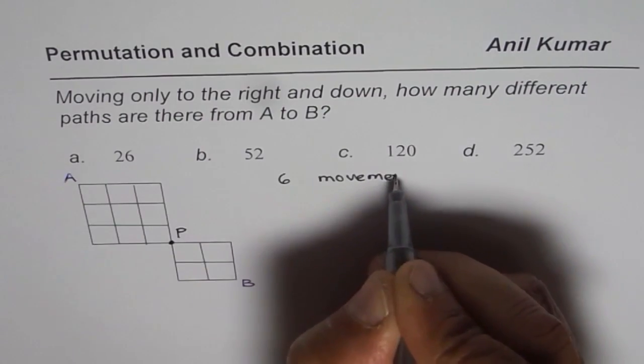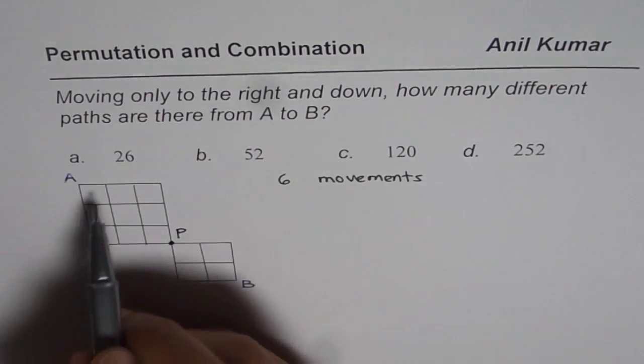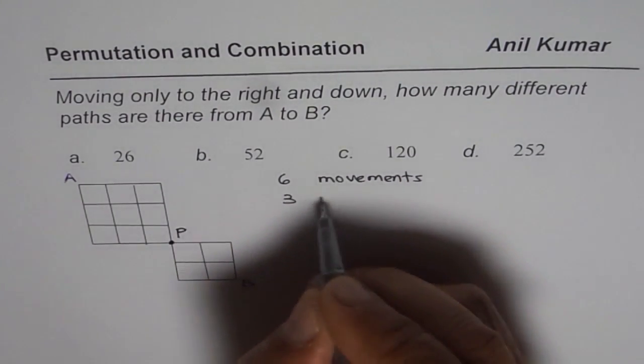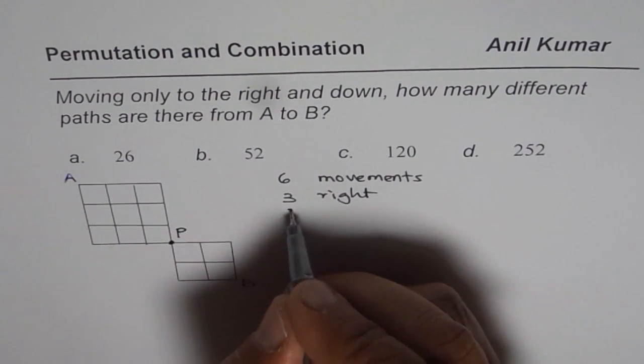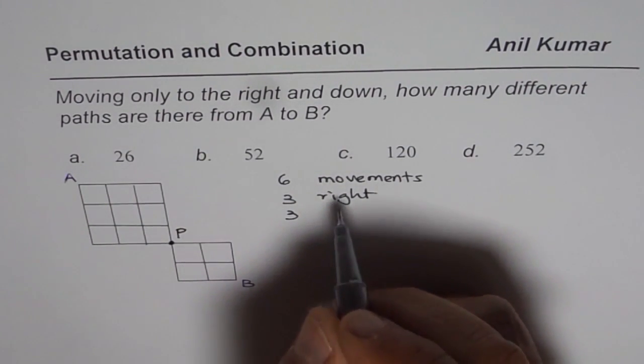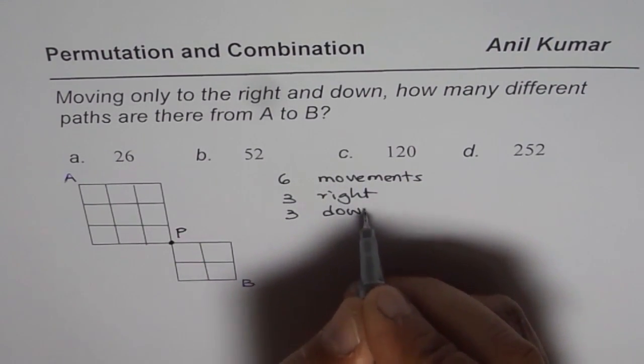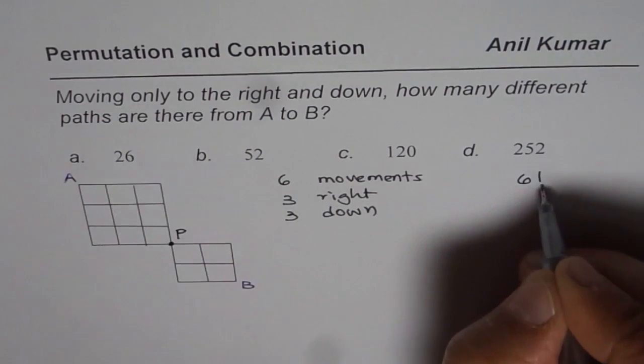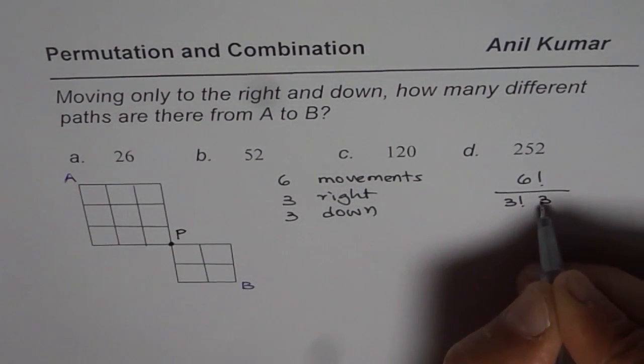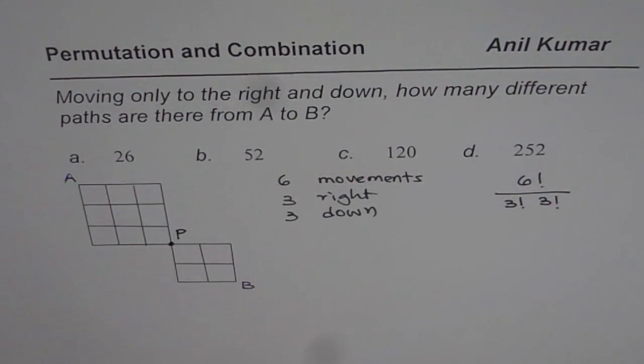Let us see, out of which three are right. We will treat them as the same, and three are down, so they are also the same. Therefore that gives us 6! divided by 3! × 3!.